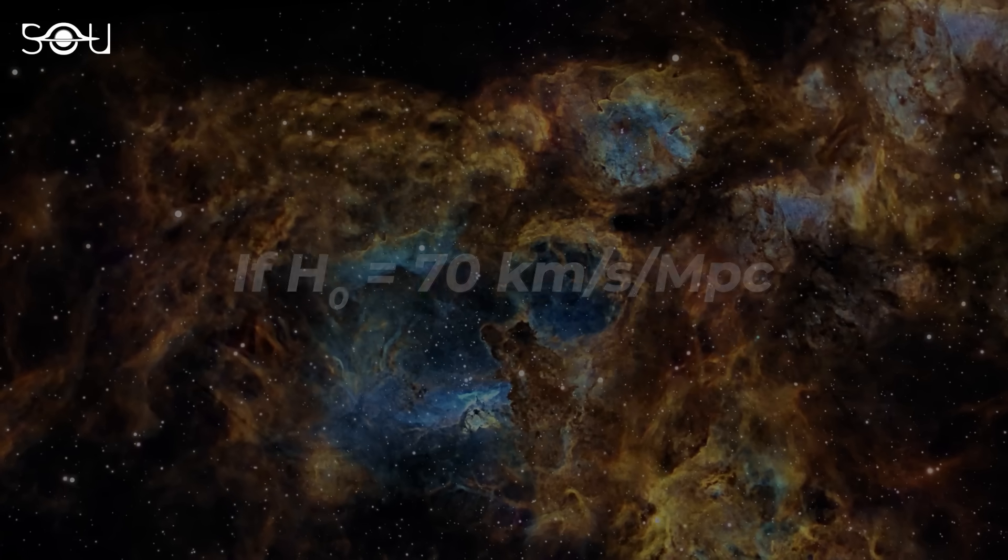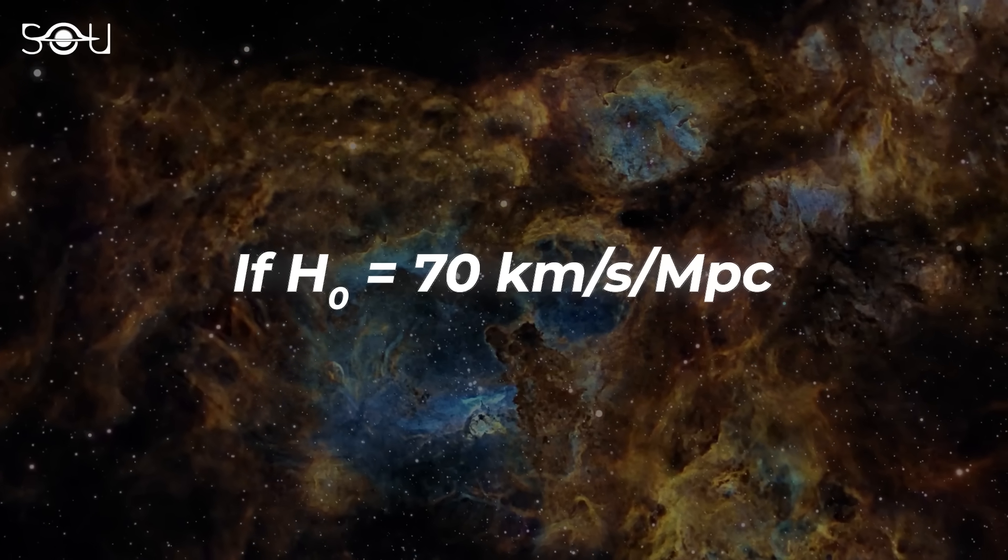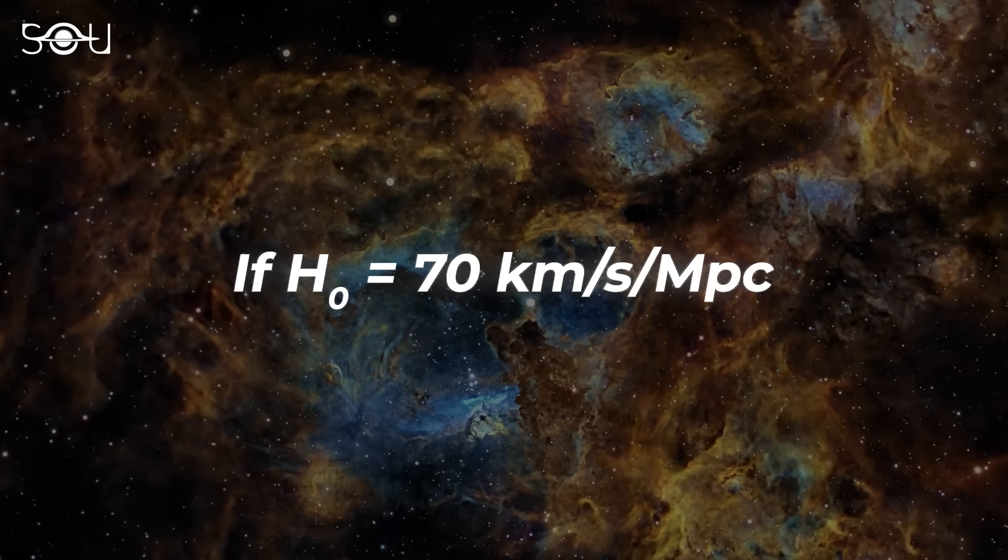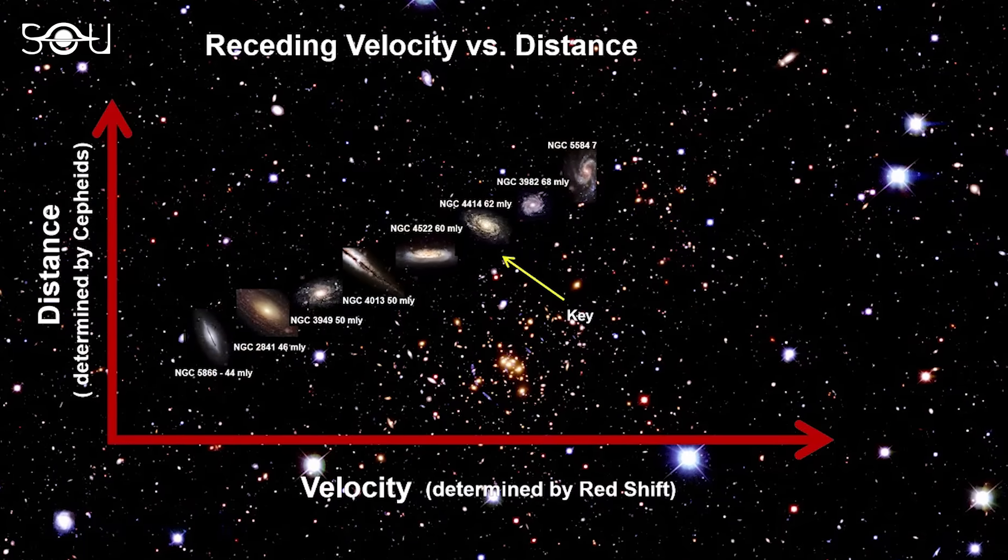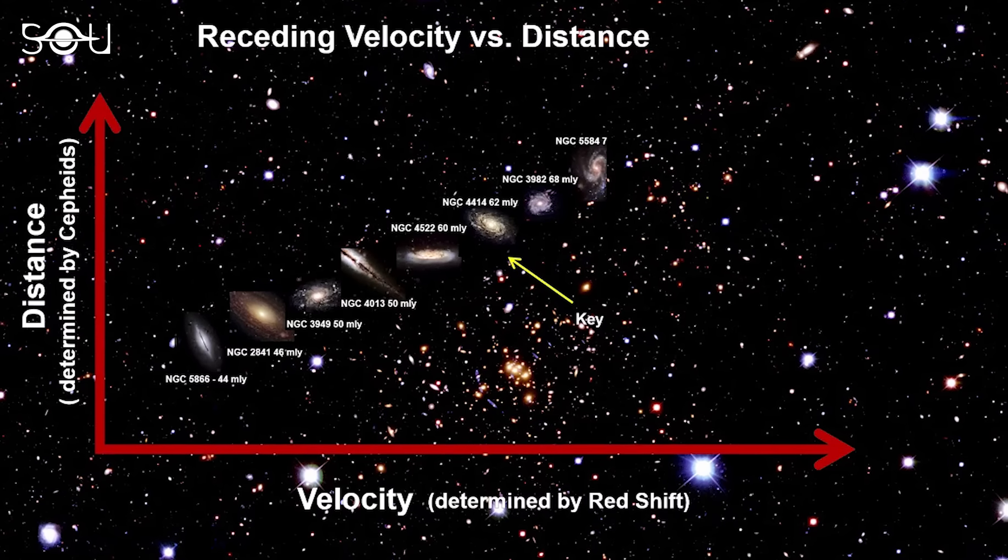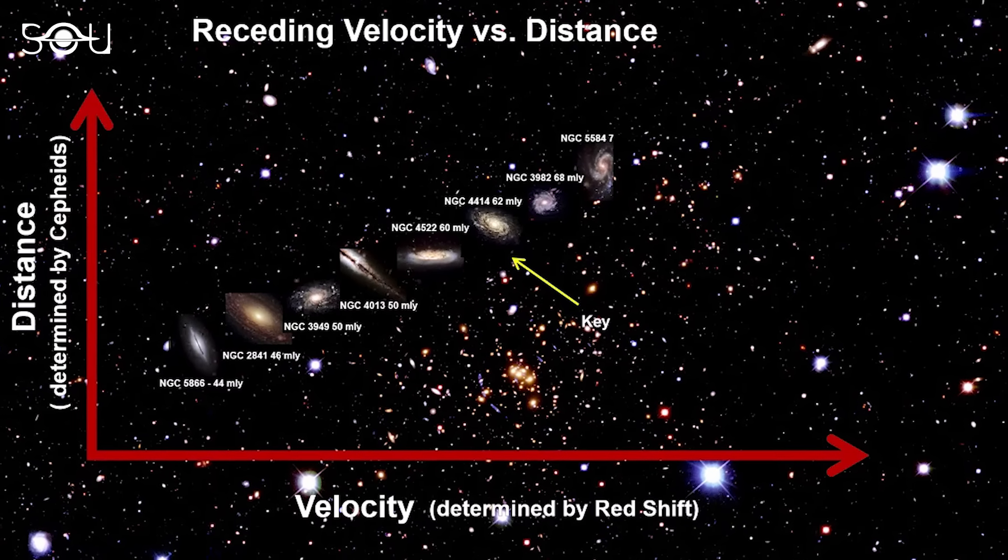So, if the value of the Hubble constant is 70 kilometers per second per megaparsec, it would mean that for every megaparsec of its distance, a galaxy would acquire an extra recessional velocity of 70 kilometers per second.